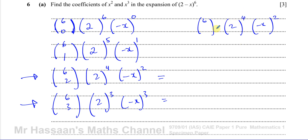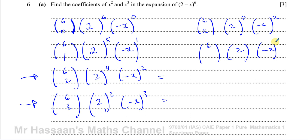For the x squared coefficient I write: 6C2, times 2 to the power 4, times (−x) squared. For the x cubed coefficient, similarly: 6C3, times 2 to the power 3, times (−x) cubed, because 3 plus 3 is 6, so the power on 2 must also be 3. Without writing out the earlier terms, I can come straight to these. But to understand why, you need to see how this builds up.